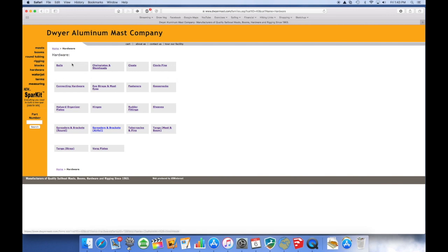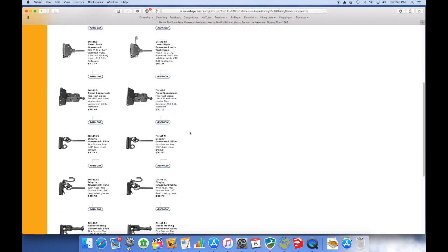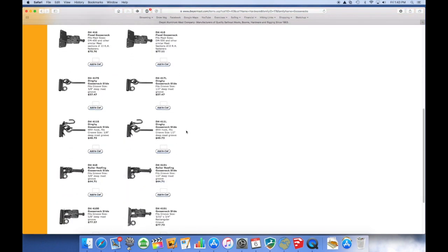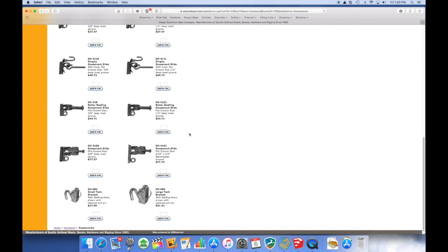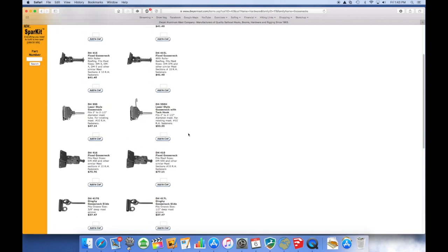And looking at the choices here, I chose Hardware, and then looking at the choices in this sub-menu I chose Goosenecks. That seemed to be what we want.